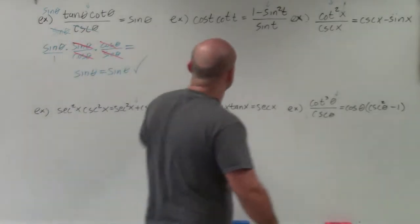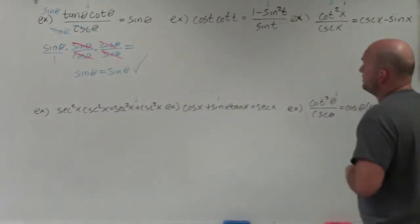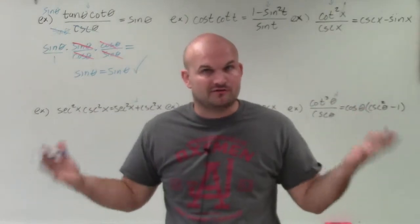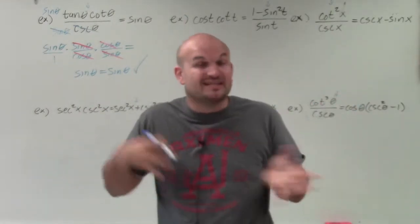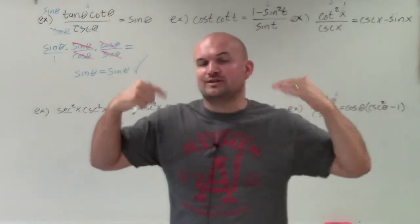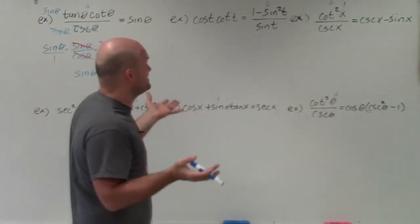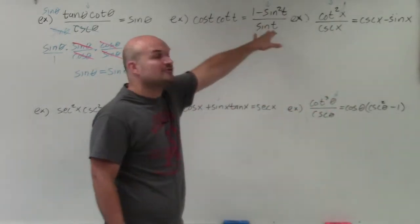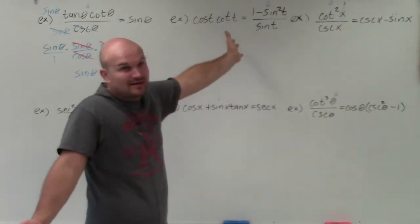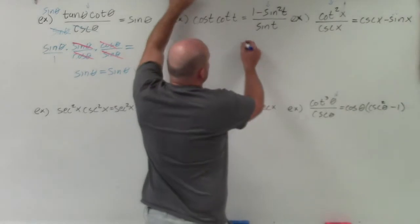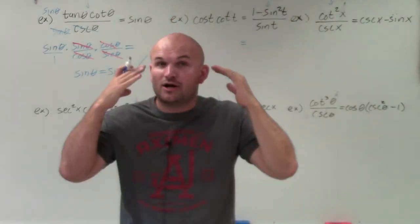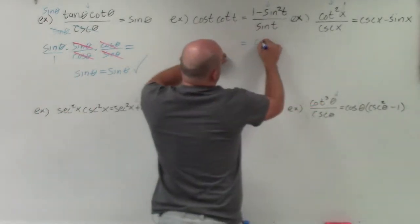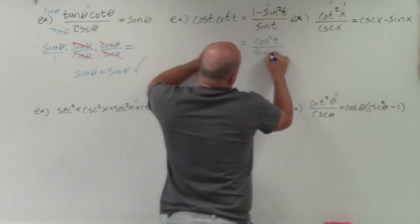On this one, we have cosine of t times cotangent of t equals (1 minus sine squared of t) divided by sine of t. General rule of thumb: whenever you have a fraction, I always like to get rid of the fraction — especially if one side is a fraction and the other is not, I always start with the fraction side. The first thing I notice is 1 minus sine squared, which is a part of my Pythagorean identities. So 1 minus sine squared can be rewritten as cosine squared of t over sine of t.